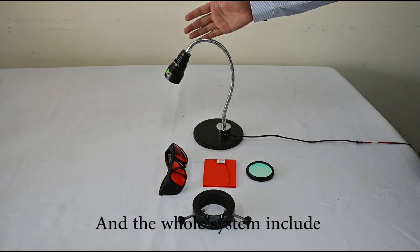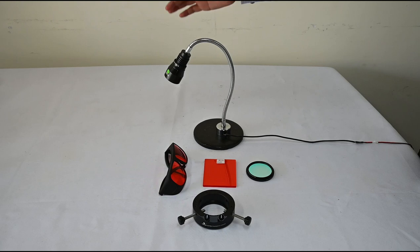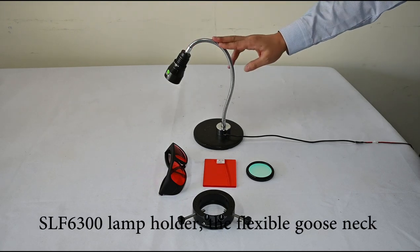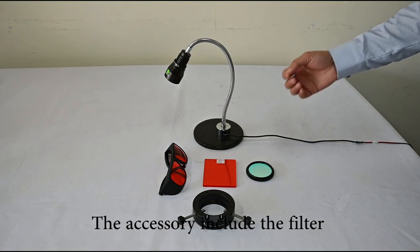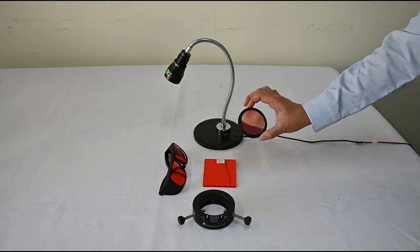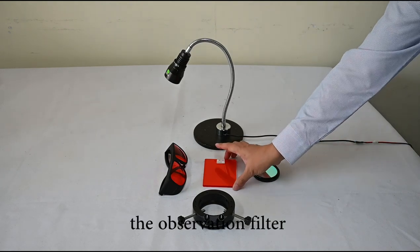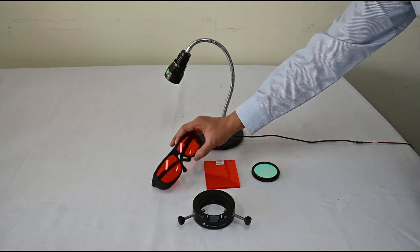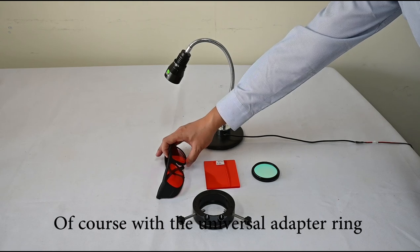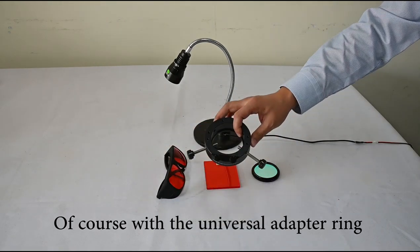The whole system includes the lamp holder, the flexible goose light, and the base. The accessories include the filter, the observation filter, and the fluorescent glasses. Of course, with the universal adapter ring.